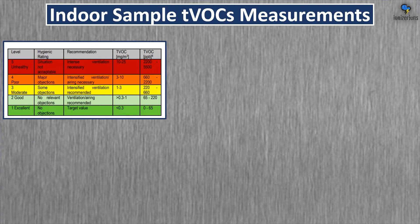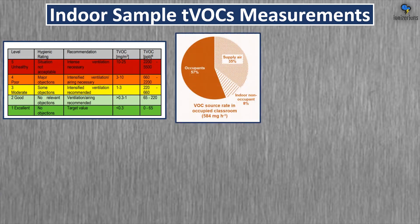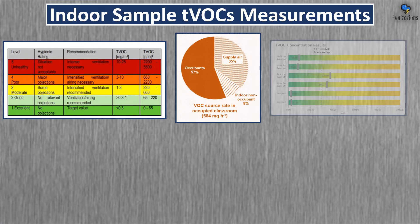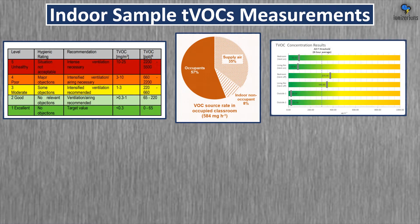Indoor sample TVOC measurements. In the first image you can see a chart for VOCs — what is excellent and what is unhealthy — shown in multiple units, which can be confusing. I prefer parts per billion. In the second image, we can see VOC source rate in an occupied classroom. Most of the VOCs we are inhaling actually come from us — we might be exhaling it or it might be coming from our clothes. The third image shows a sample of VOCs in the home versus outside, so a bedroom will have very high VOC while outside could have very low VOC — it's not the same in every room.